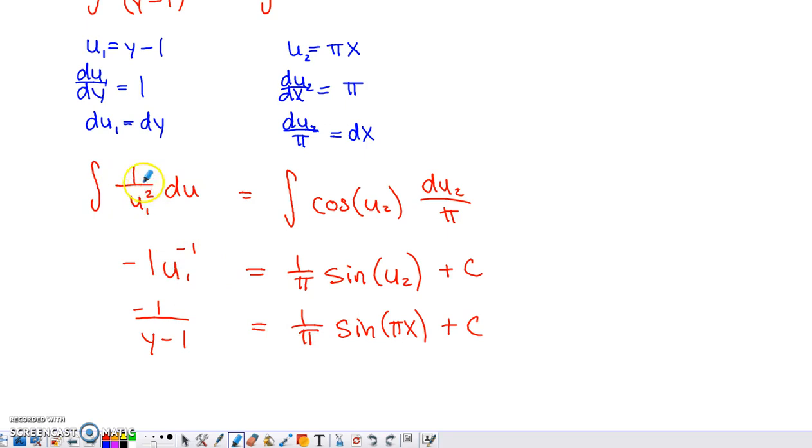On the left side, I looked at this and thought, this is really u to the negative second, right? 1 over u squared is really u to the negative second. So if I add 1 to negative 2, I get negative 1. And if I divide by negative 1, I just have that ended up being negative. So this really is negative 1 divided by u to the first. If I back substitute y minus 1 in place of the u, I end up with this. So this is an implicit form of the general solution.